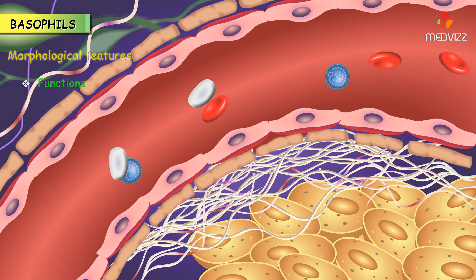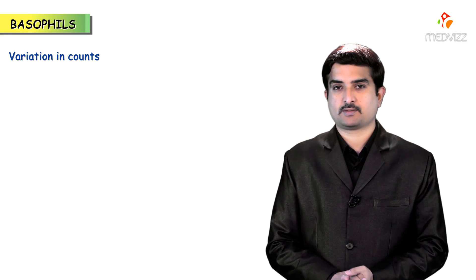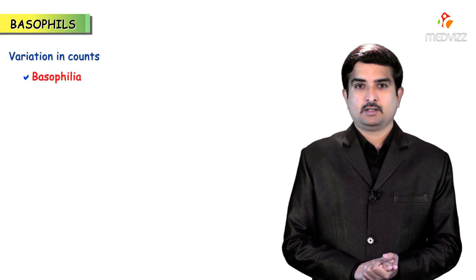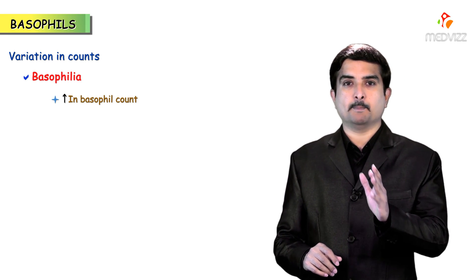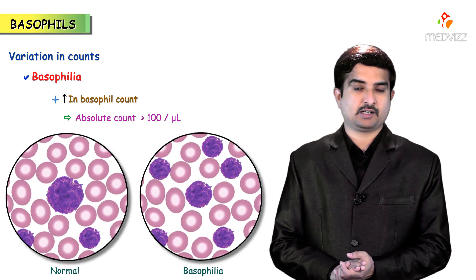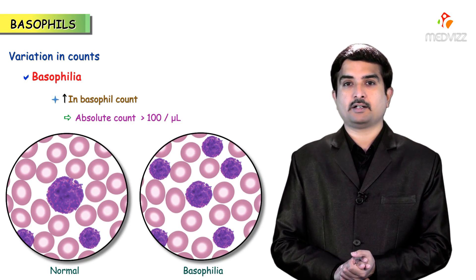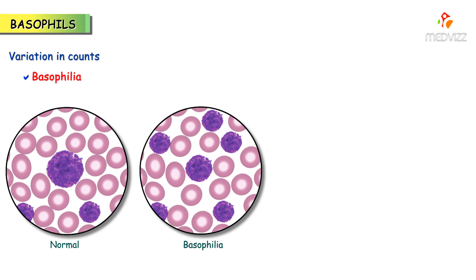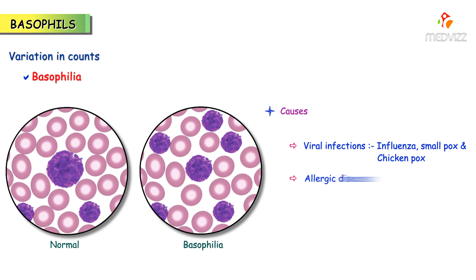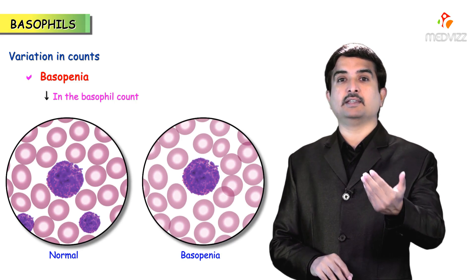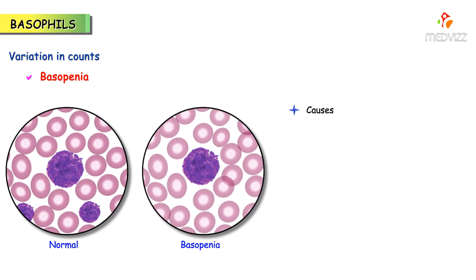Let us talk about variations in counts. Basophilia means an increase in the basophil count, where the absolute basophil count is greater than 100 per microlitre. The causes of basophilia include viral infections such as influenza, smallpox, and chickenpox, as well as allergic diseases and chronic myeloid leukemia.